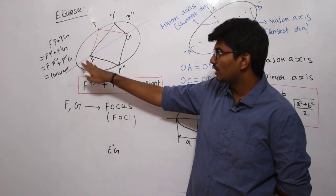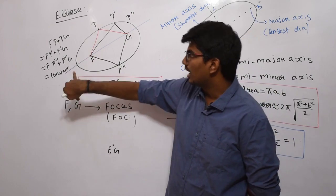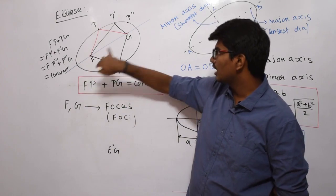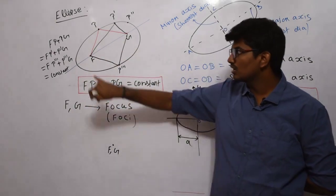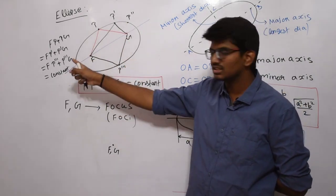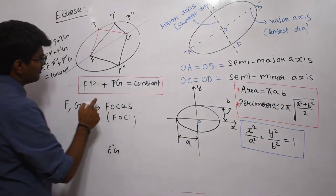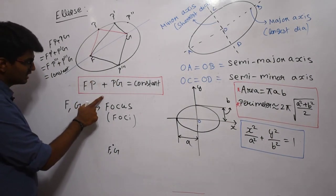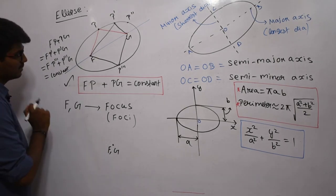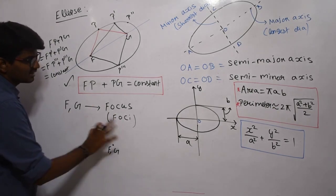If I draw the curve such that this condition is satisfied, I can call that curve an ellipse. F and G are fixed points and should not move. The point P can be fixed anywhere to draw the curve. If any curve satisfies this definition, it is said to be an ellipse. F and G are called focus, and combined they are called foci.